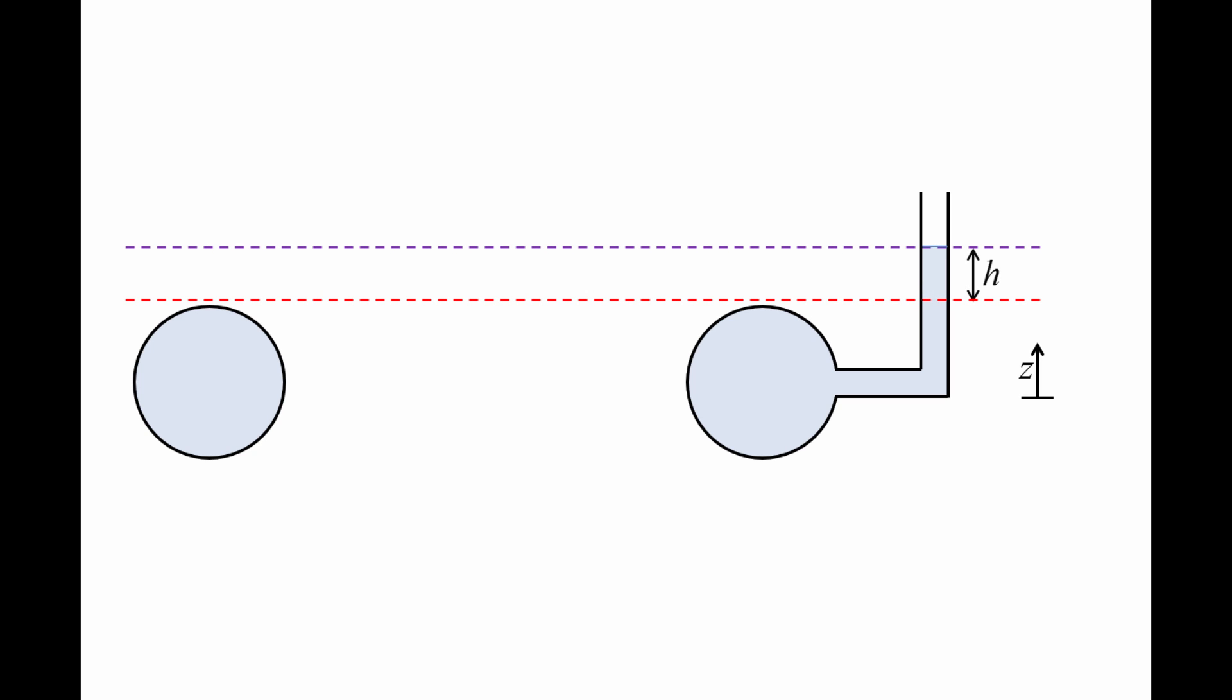This is because the fluid level in the tube will change by only a small amount and you will be limited by the accuracy of your ruler or whatever you use to measure the length. However, if we tilt the tube at an angle theta, the fluid level would rise vertically by the same amount but would travel a longer distance along the tube.